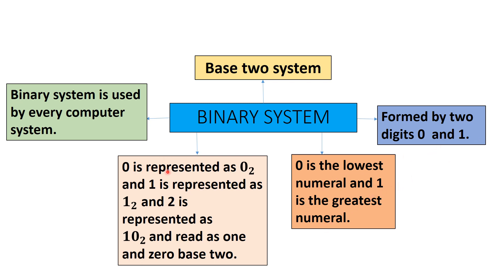Zero is represented as 0 base 2, and one is represented as 1 base 2. The number two is represented as 10 base 2 and read as 'one zero base two.' The binary system is used by every computer system.